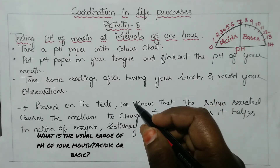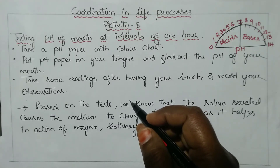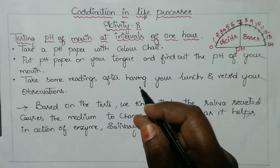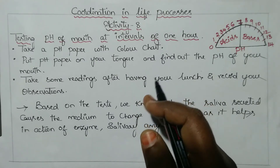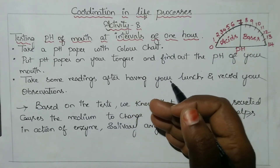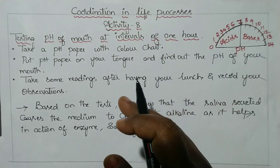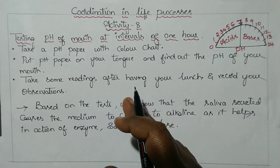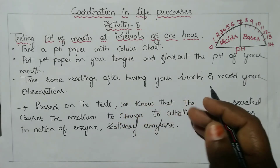As long as saliva is present in our mouth, our mouth is going to be alkaline. The saliva keeps our mouth at an alkaline pH. As long as saliva is produced in our mouth, the pH is also alkaline.